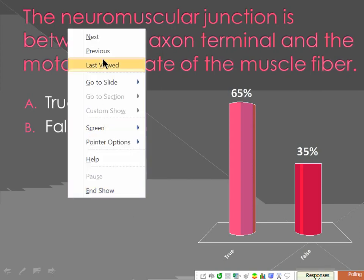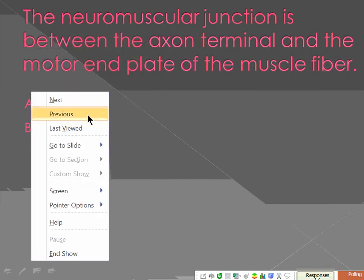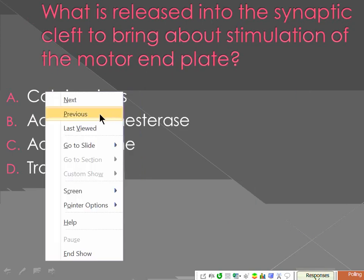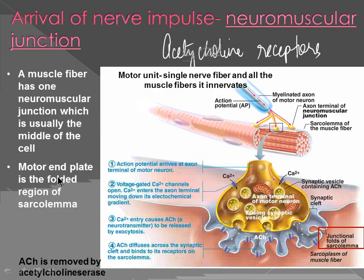You must look at your slides carefully. The motor end plate is listed here, and axon terminal at the neuromuscular junction — the sarcolemma of the muscle fiber. The sarcolemma is called the motor end plate. It is between the axon terminal and the motor end plate. The motor end plate is the folded region of sarcolemma at the neuromuscular junction.